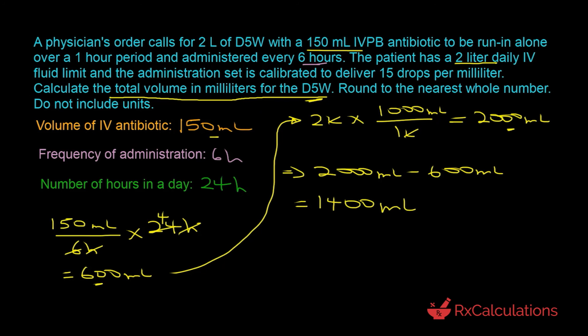The question says round to the nearest whole number — 1,400 is already a whole number. Do not include units, so the answer is 1,400.